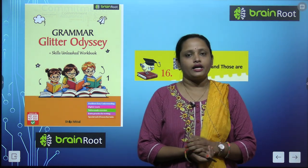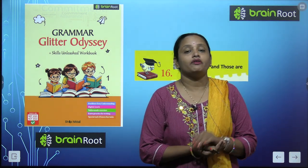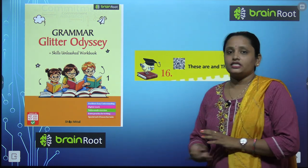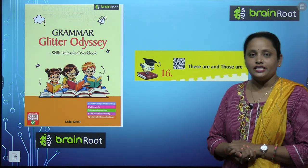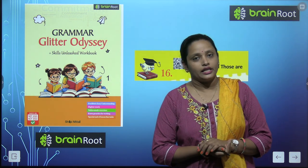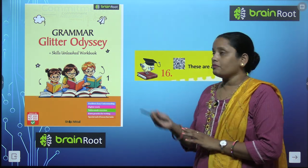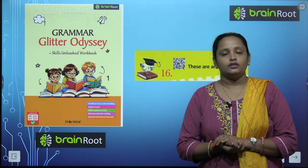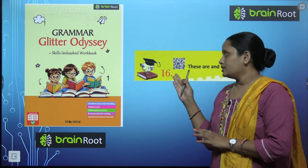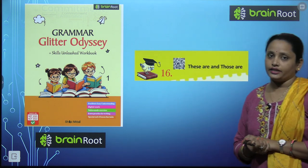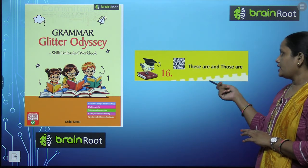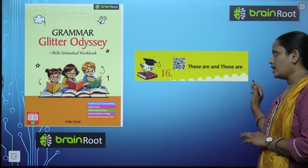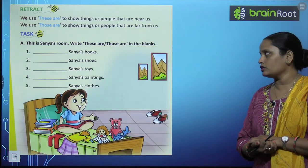Hello my dear kids, welcome back. I am Vandana and we are learning English grammar — it is by the Brainroot series. Here is a book and the name is Grammar Glitter Odyssey, Book 1. Today we are going to start chapter number 16, and the name of the chapter is 'These Are and Those Are.' So let's read this chapter.